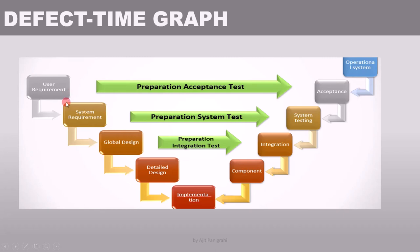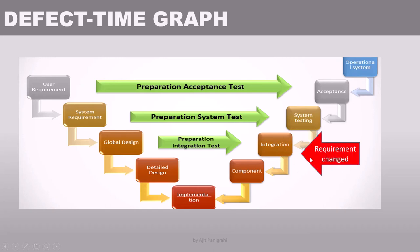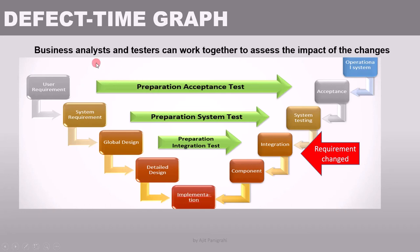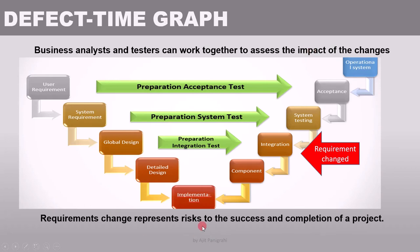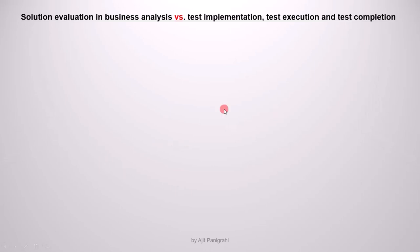An important point: in reality, requirements are often modified late in the software development cycle. If requirements are modified during the testing phase, business analysts and testers can work together to assess the impact of the changes. Remember, requirements change represents a risk to the success and completion of a project, and proper analysis is needed to reduce this risk. The second example is solution evaluation in business analysis versus test implementation, test execution, and test completion.